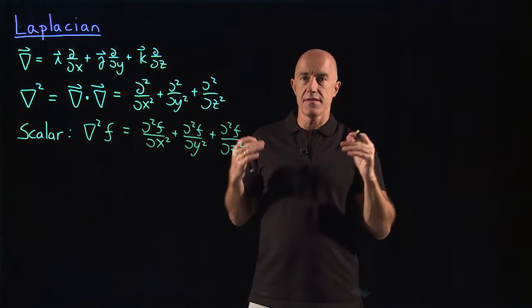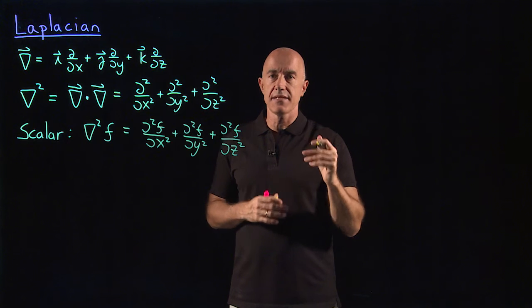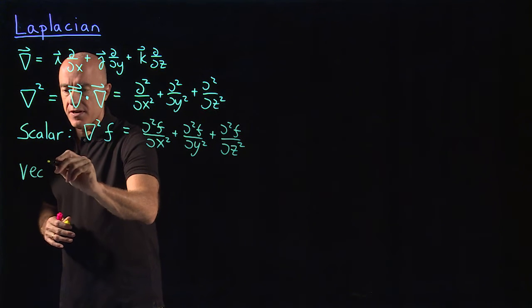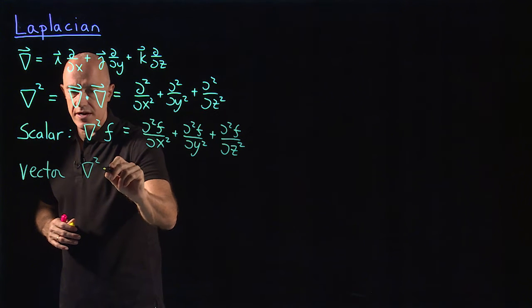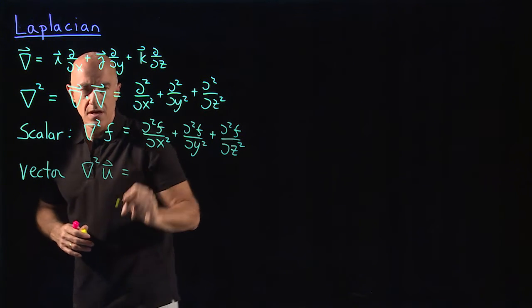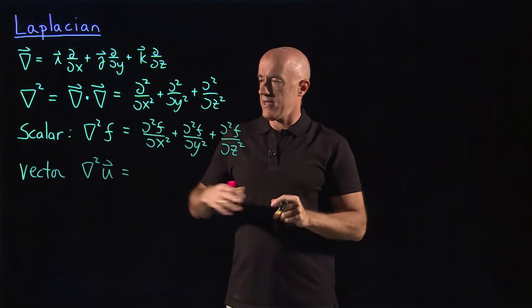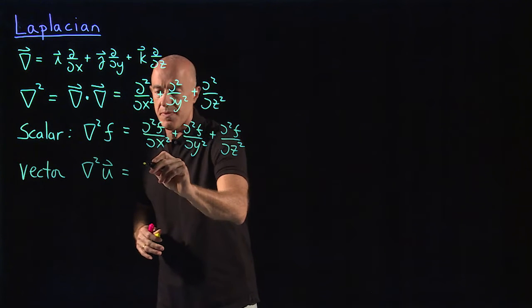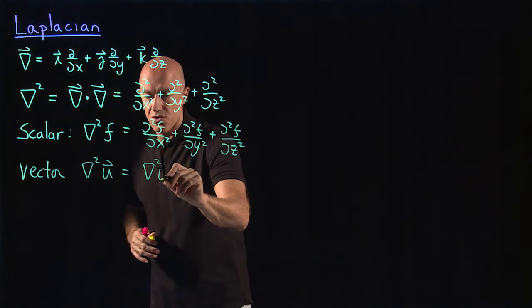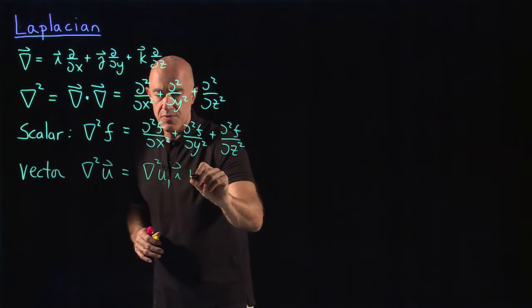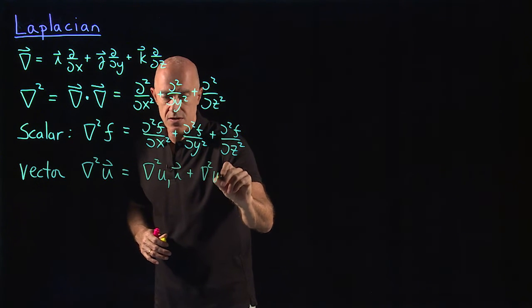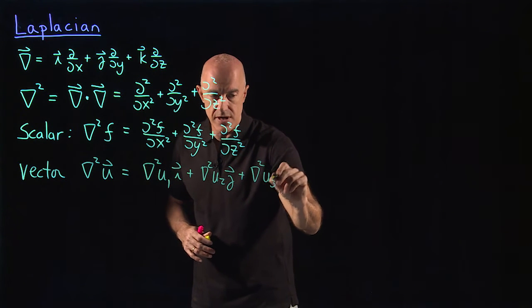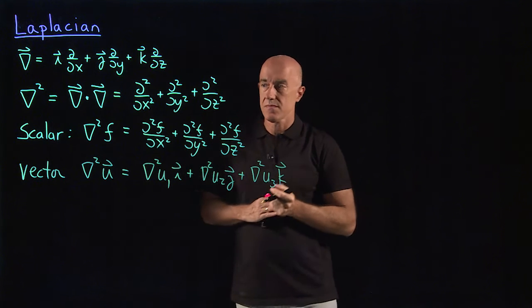What about if del squared, the Laplacian acts on a vector field? For a vector field, we could write del squared u. How you interpret this is that del squared acts on each component of u. So this would be del squared u1 times i plus del squared u2 times j plus del squared u3 times k.